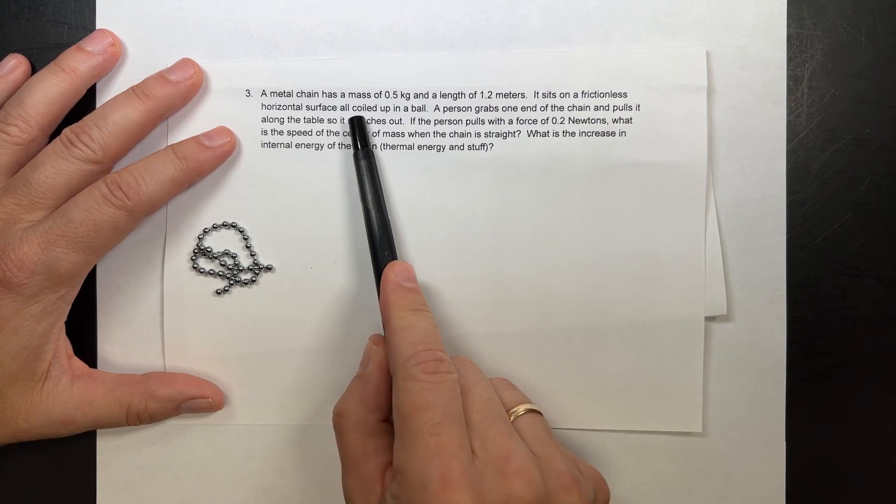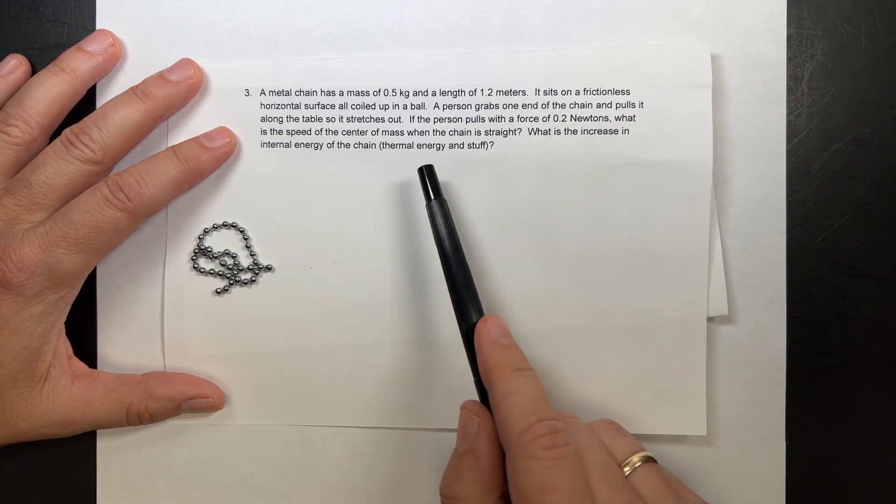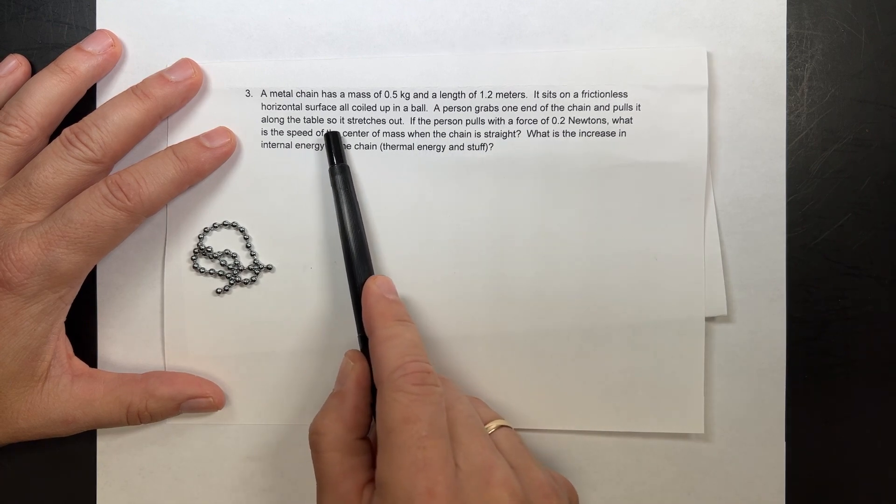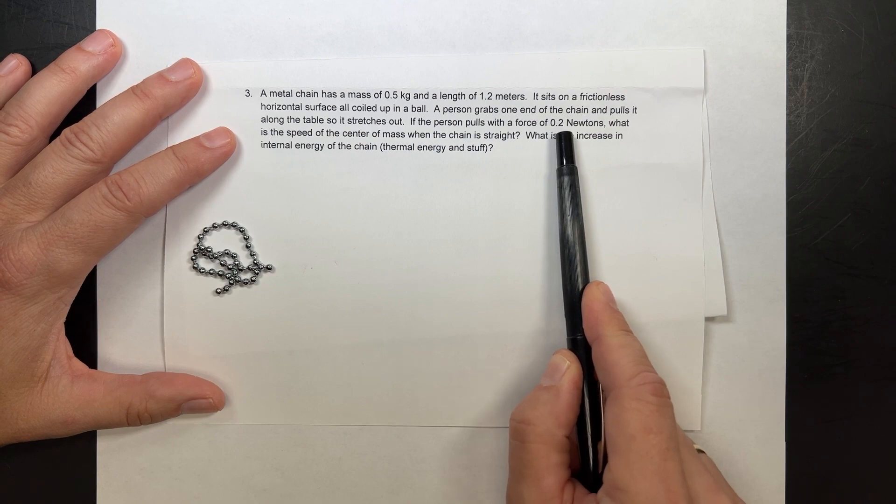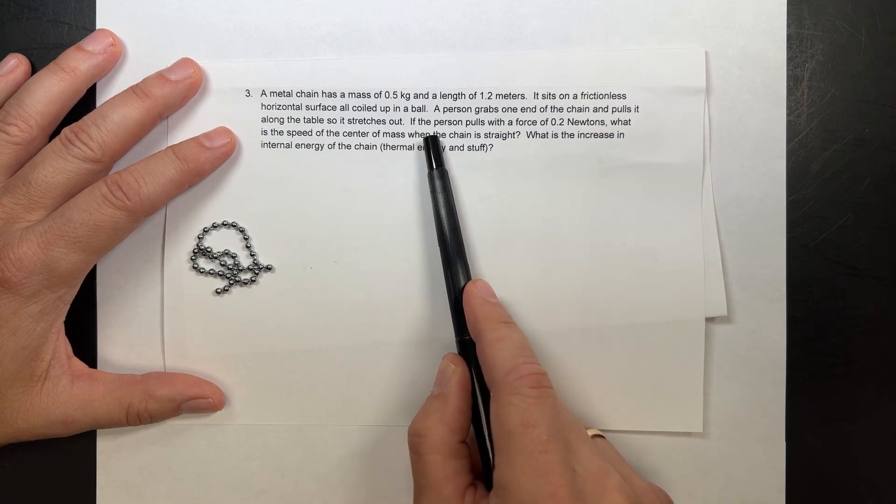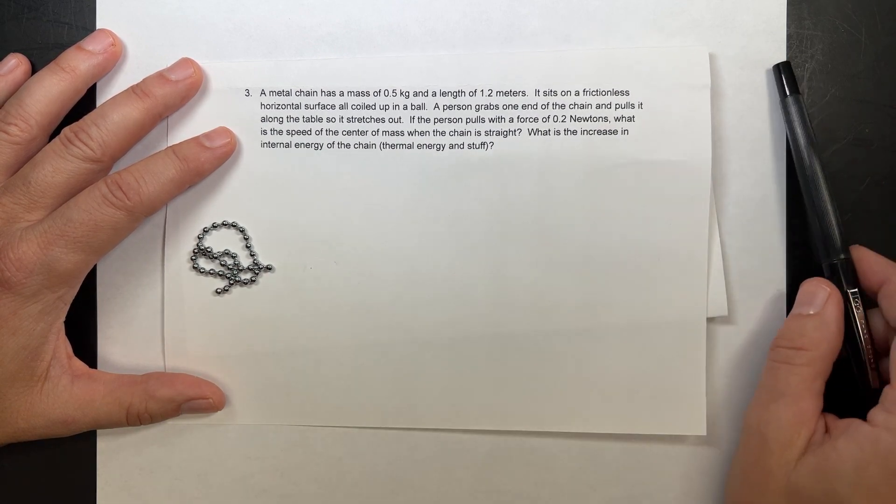So frictionless horizontal surface coiled up in a ball. A person grabs one end of the chain and pulls along the table so it stretches out. The person pulls with the force of 0.2 newtons. What is the speed of the center mass when the chain is straight, and what's the increase in thermal energy?